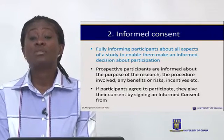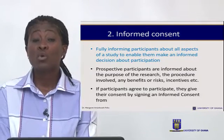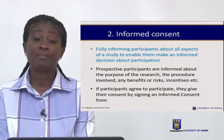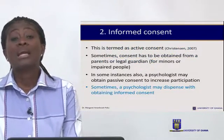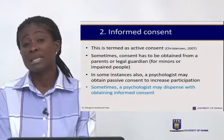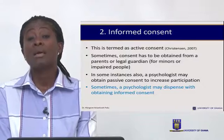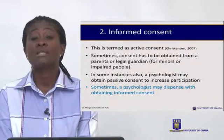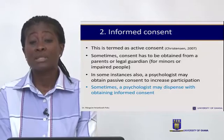If participants agree, you give them what you call a consent form to sign. For those who cannot sign, they thumbprint it. Where participants sign or thumbprint the consent form, this is referred to as giving active consent. Sometimes we may have to obtain consent from the parents or legal guardians of minors — so if you have a 5-year-old or a 10-year-old you want to test, because these are minors, you seek the consent of their parents.